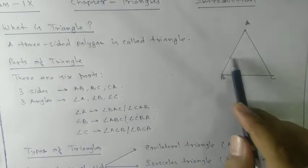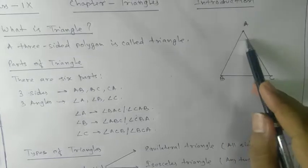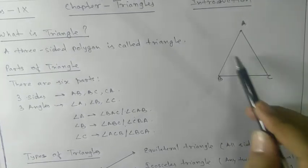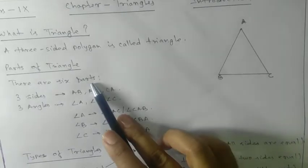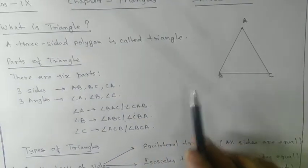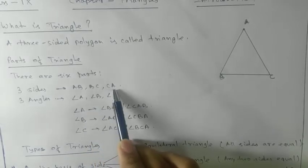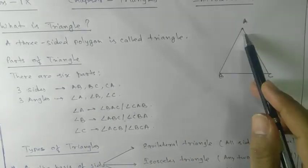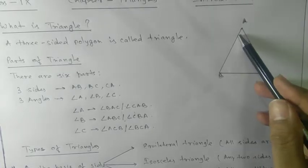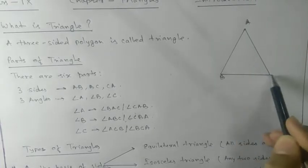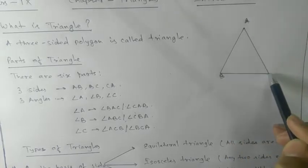In a triangle you can see six parts — three sides and three angles, total six parts. The sides are named AB, BC, and CA. Instead of saying AB you can say BA also. BC can be written as CB also, and AC can be written as CA also.